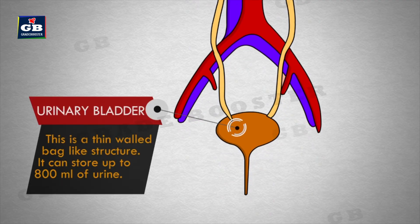The urinary bladder is a thin-walled bag-like structure. It can store up to 800 ml of urine.